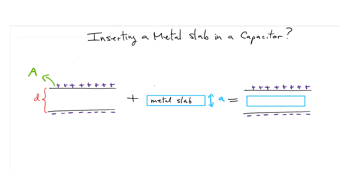Here's the system in question. I'm inserting a metal slab in a capacitor. Let's consider this parallel plate capacitor — I'm going to assume it is charged, meaning there is a charge plus Q on one plate and minus Q on the other. The area of the plate is given by A and the spacing between the plates initially is D. The capacitance, if it's air-filled or vacuum-filled, is simply ε₀A divided by D.